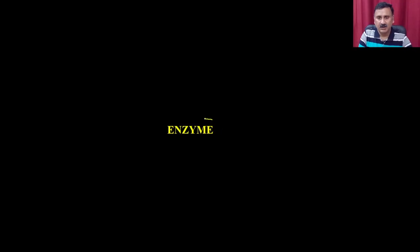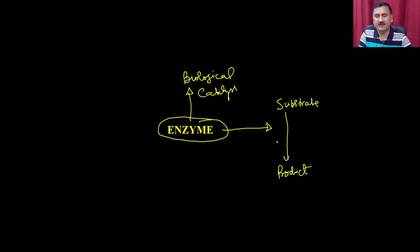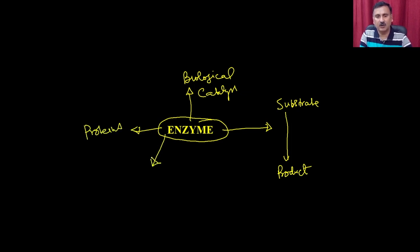Enzymes are central molecules and are also called biological catalysts. They are converting the substrate into the product, and in this process they are not being consumed. Enzymes in general are made up of proteins, but there are exceptions where enzymes are made up of RNA molecules, and these enzymes are called ribozymes.